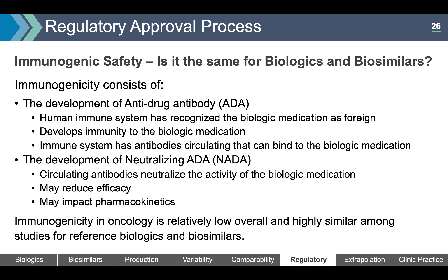Another part of the regulatory approval process is immunogenic safety. Immunogenicity consists of the development of anti-drug antibodies, where the human immune system recognizes the biologic as foreign and develops immunity to it — circulating antibodies that can bind the biologic medication. If this progresses to neutralizing anti-drug antibodies, those antibodies neutralize the biologic's activity, potentially reducing efficacy or impacting pharmacokinetics. Immunogenicity in oncology is relatively low overall and highly similar among studies for reference biologics and biosimilars — contrasting with inflammatory conditions like Crohn's disease and rheumatoid arthritis, where anti-drug antibodies may be as high as 50–60%.